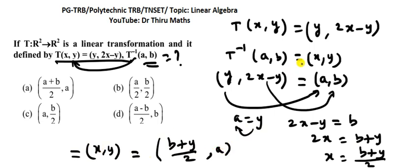So (x,y) equals ((b plus a) divided by 2, a). Therefore T inverse of (a,b) equals ((b plus a) divided by 2, a).